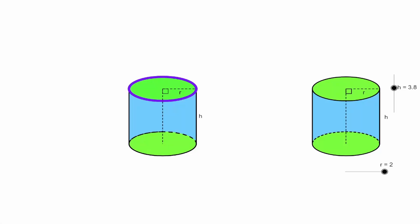Welcome, let's discuss the surface area of a cylinder. We want to figure out how much area we need to cover all the sides of the cylinder. Notice that the cylinder can be broken down into three parts: the area of the circle on the top, the area of the circle on the bottom, and the area that covers the side of the cylinder. But how do we find the area of each of those parts individually?